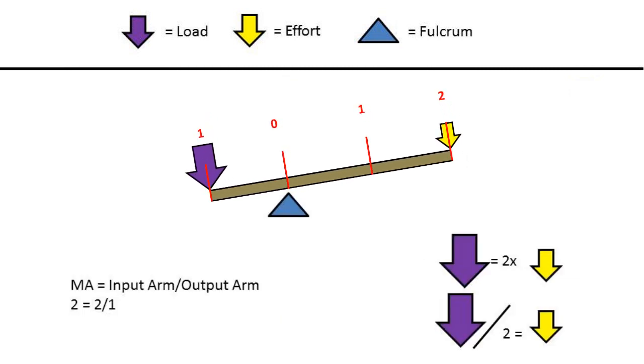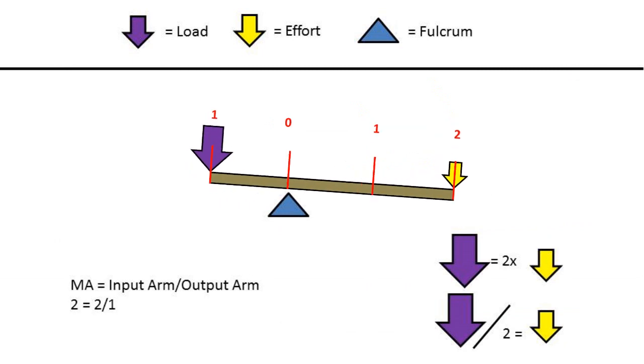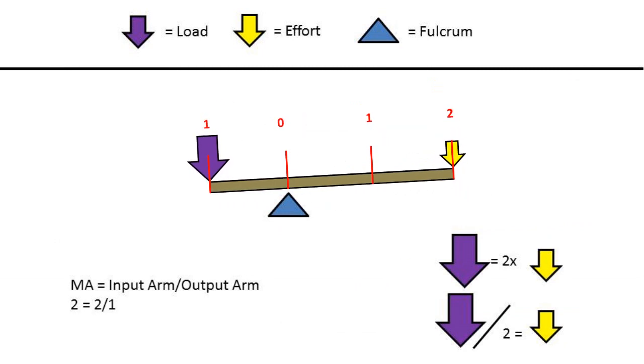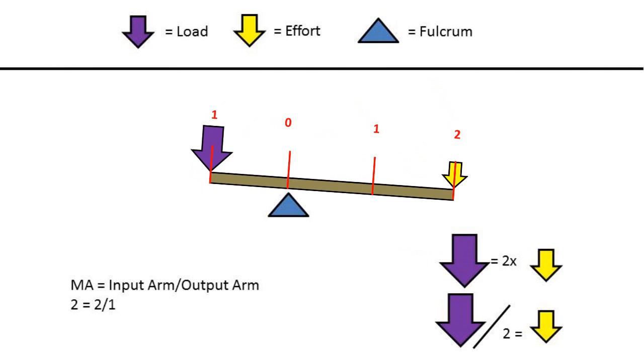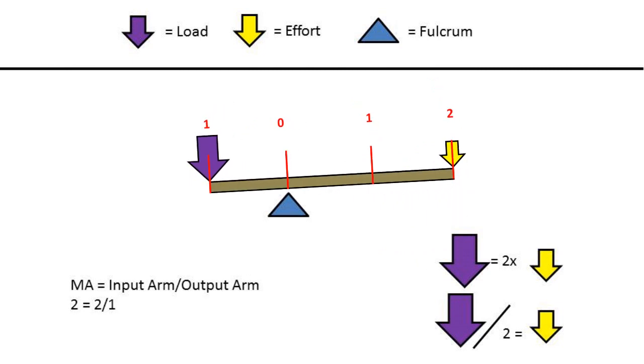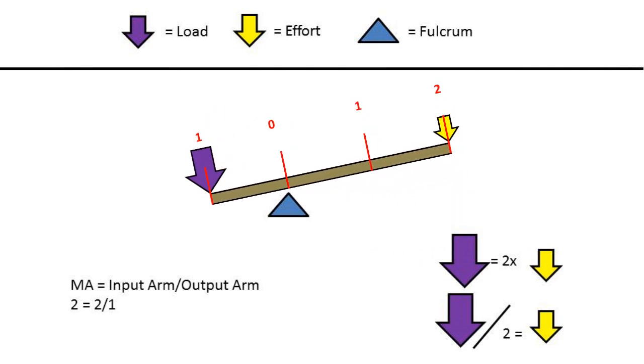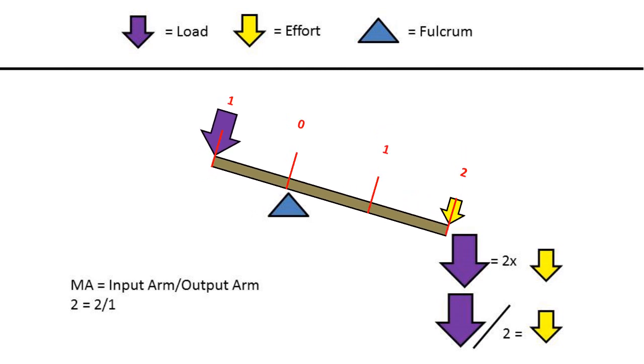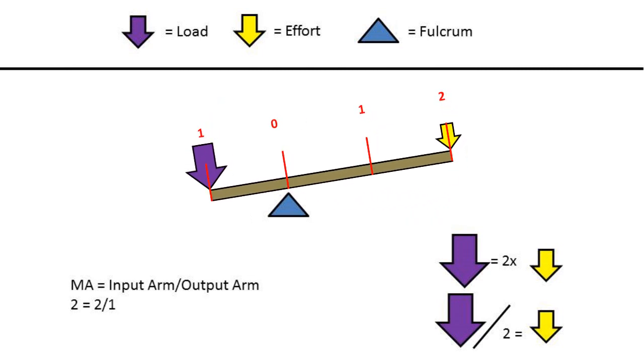Now let's take a look at a first class lever that has a load one unit of distance from the fulcrum and an effort two units of distance from the fulcrum. To calculate the mechanical advantage we can take the input arm distance of two over the output arm distance of one to get a mechanical advantage of two.